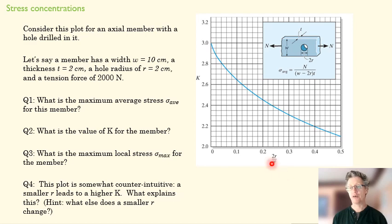So, if 2R/W is 0.2, we go up here to find the line, and that tells us our K value is 2.45. So, I'll pause here.